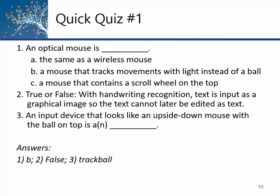Quick quiz — there are only three quizzes in this short lecture. An optical mouse is: A) the same as a wireless mouse — no, wired and wireless has nothing to do with optical; B) a mouse that tracks movements with light instead of a ball — yes; or C) a mouse that contains a scroll wheel at the top. The mouse can be laser or the older format and still have a scroll wheel, so B is the right answer. I can look down and confirm that B is correct.